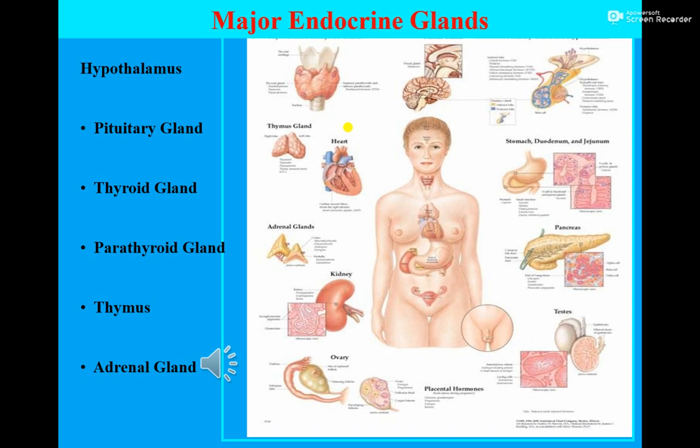The following are the major endocrine glands in our body: hypothalamus, pituitary gland, thyroid gland, parathyroid gland, thymus, and adrenal gland are the major endocrine glands in the human body.